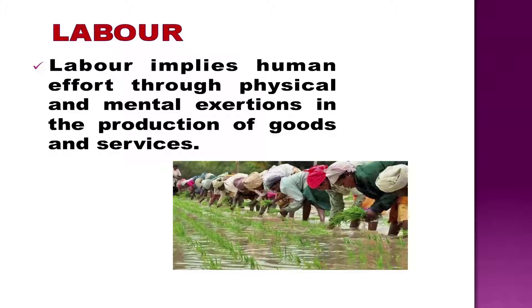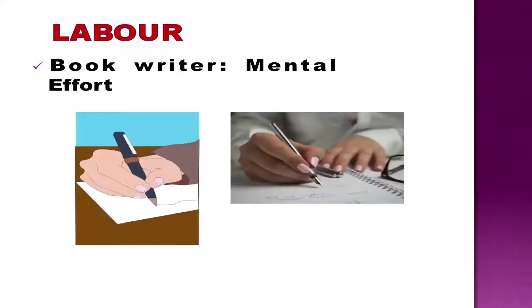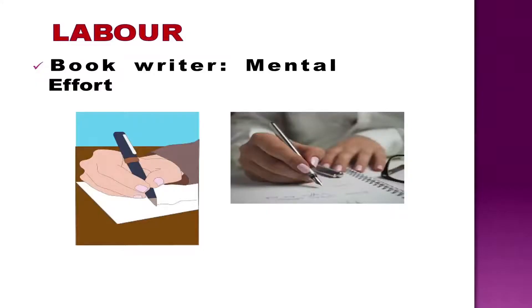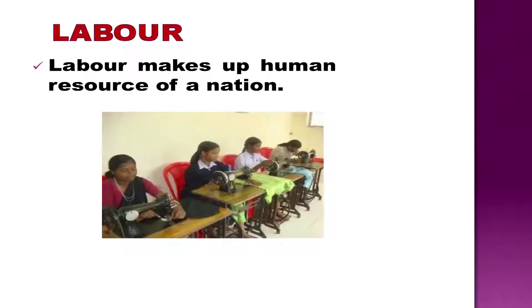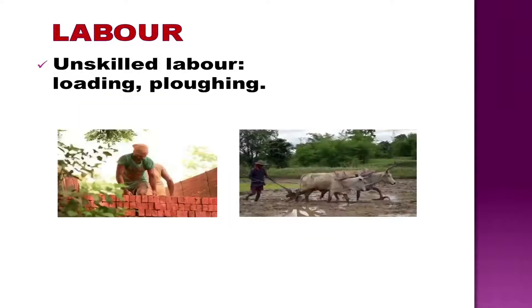Labor, the next factor of production, implies the human effort through physical and mental manpower or exertions in the production of goods and services. A person working on the agricultural field is said to provide physical labor, while mental labor is also provided through combination of other factors. A writer is said to provide mental labor. People who provide labor are known as human resources. Production activities require both skilled and unskilled labor. Purely physical labor such as loading and unloading, plowing on the field, etc. do not require special skills.